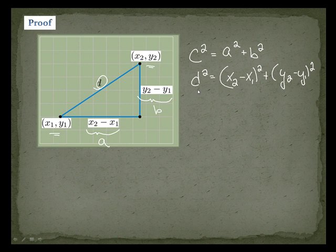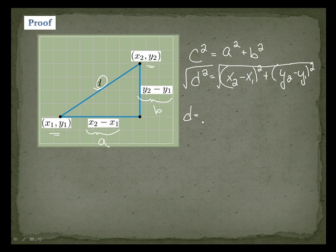Now remember, we don't want to know what d squared is — we want to know d. So that's why we take the square root. And that's how our formula is found.